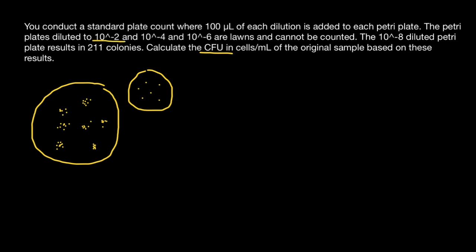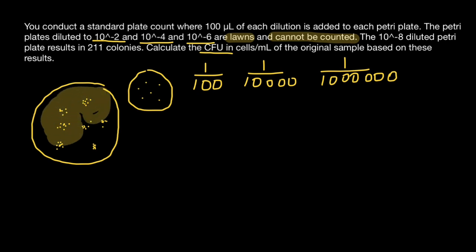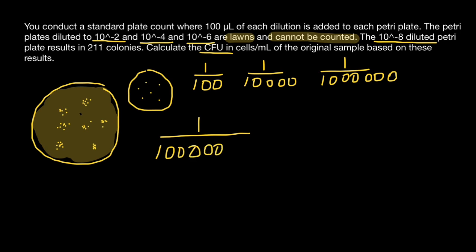According to our problem, dilution by 100 fold, and dilution by 10^-4 is 1 divided by 10,000, so 10,000 fold dilution. And even 10^-6, which is 1 divided by a million, so million fold dilution, gave us lawns and cannot be counted. Lawns means that the number of bacteria is so numerous that we got just a single layer of bacteria which is not countable. But at a dilution 100 million times the original sample, 10^-8, we got results.